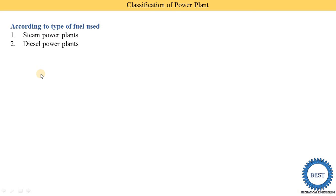The second type is the diesel power plant. Diesel is a chemical fuel — by burning diesel we produce heat energy, and this heat energy is converted into mechanical energy, which is then used to produce electrical energy.